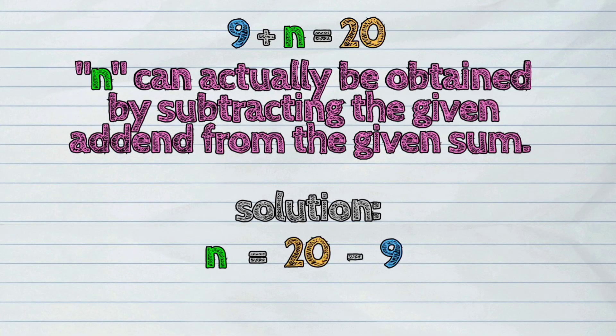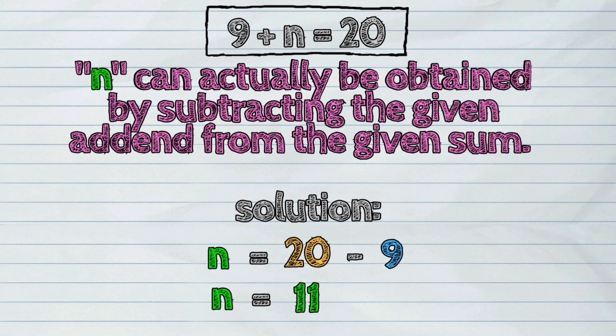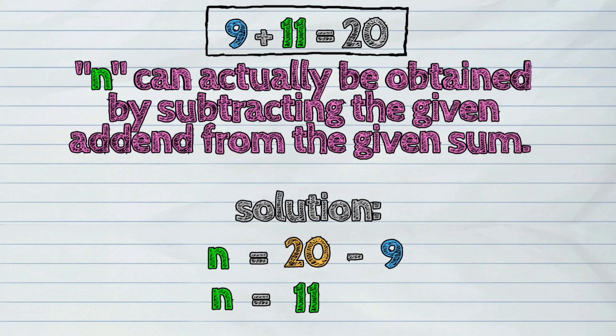The answer here is 11. Therefore, the equation is 9 plus 11 equals 20.